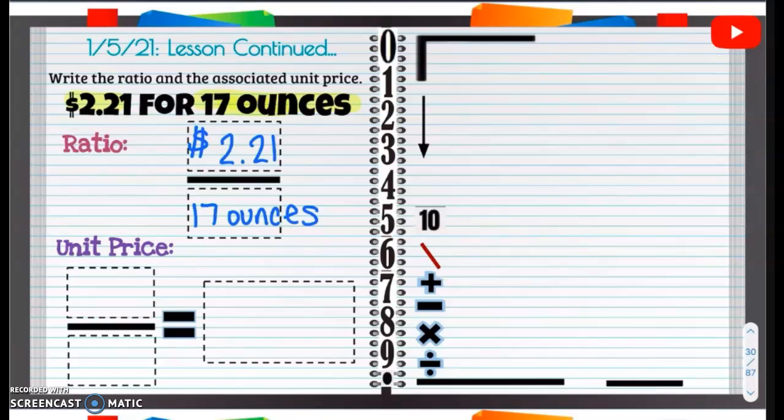Now what we're going to do is put it down here: $2.21 for 17 ounces. So we're literally just going to divide. That's it. So when we divide, $2.21 divided by 17.